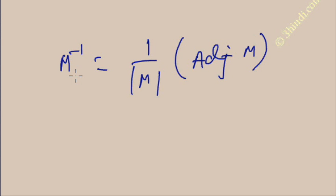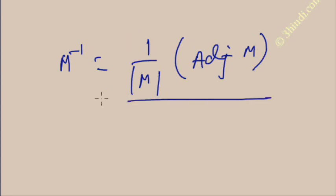Now, finally, how do you calculate the inverse of a matrix? Once you have the value of the adjoint, you just multiply it by 1 divided by the determinant of that matrix. This gives you the inverse. I hope you know how to calculate the determinant of any square matrix. You find the determinant and multiply 1 over the determinant value by the adjoint of that matrix to get the inverse.